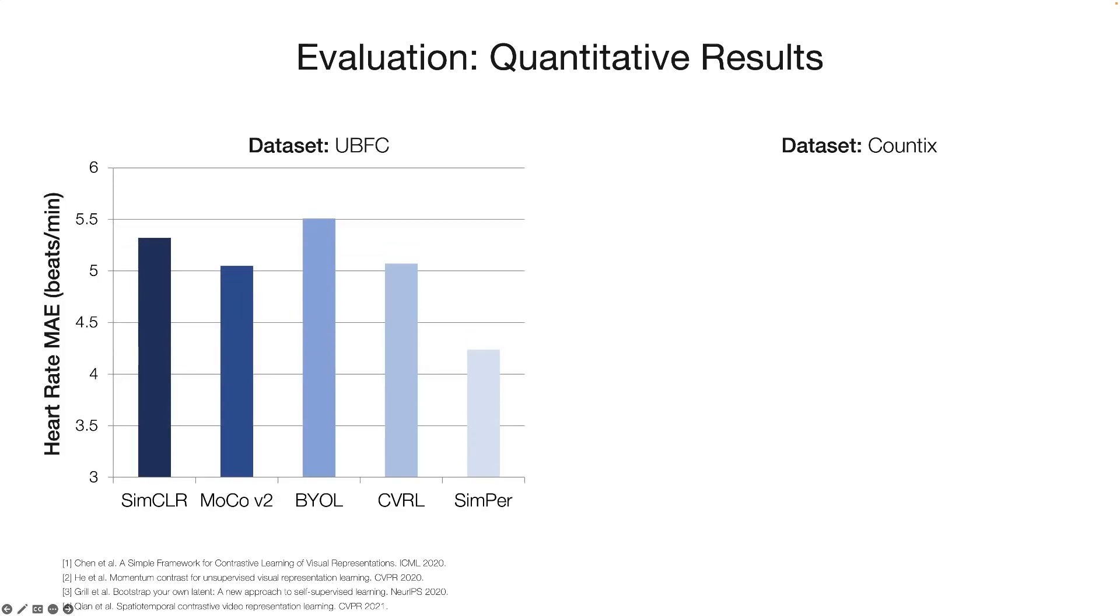First, in UBFC, which is a human PPG and heart rate prediction dataset, we compare SIMPER to state-of-the-art SSL methods and observe that SIMPER outperforms all these methods. We highlight that the supervised baseline achieves an MAE of 4.7 beats per minute for heart rate estimation, where SIMPER even outperforms the supervised counterpart by 15 percent.